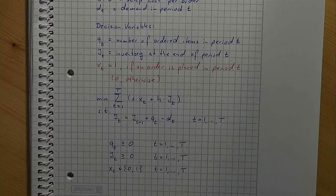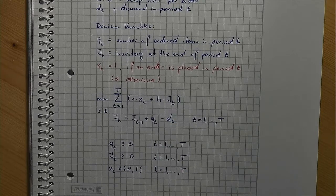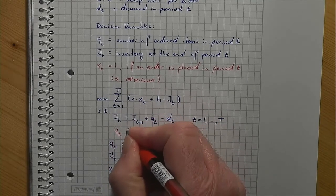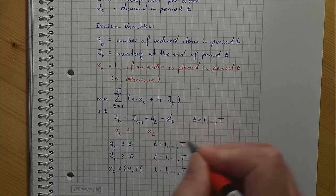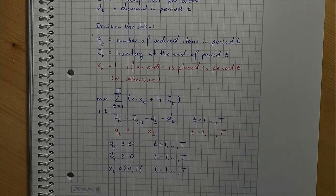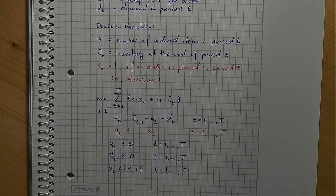Here you will see the modeling trick that this video is all about. Let's do it step by step. It should be clear that if we do not place an order, indicated by xt equals zero, then the number of items being ordered is zero. In a first attempt we could write qt is less than or equal to xt in all periods, which makes sure that when xt equals zero, qt cannot be positive. But something is odd: because qt is zero-one valued, if xt equals one to indicate that an order is placed, the maximum size of the orders is limited to one, which is not sensible in most situations.